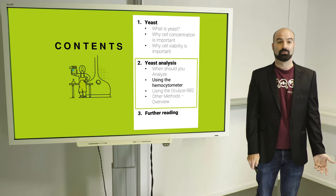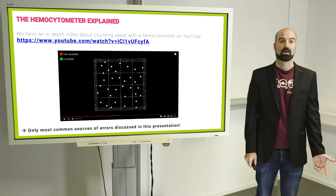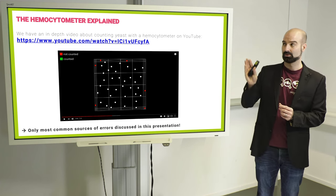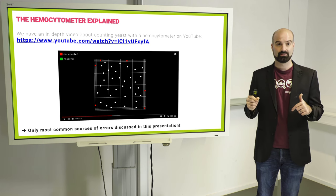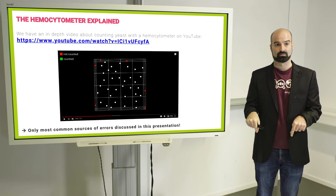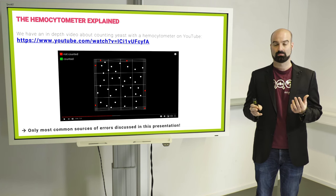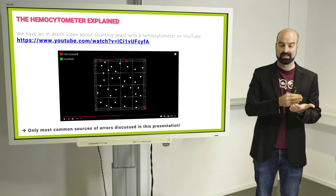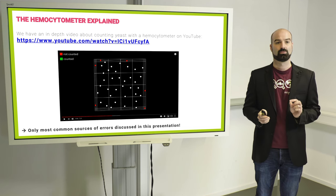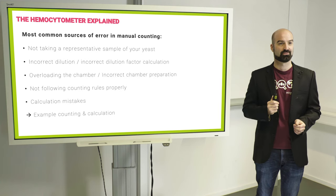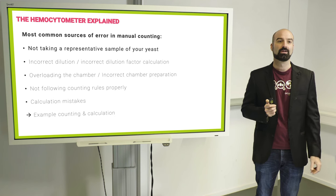So the most common, or at least historical, way to analyze yeast is using a hemocytometer. How does a hemocytometer work? We have a very detailed video which you can find on YouTube. And if you're watching this video on YouTube, we will also have the link in the description below, where you can see in much detail how the hemocytometer is used from beginning to end. In this presentation, we will focus on the most common sources of error that we've seen actually in practice happening in breweries. So this is the list of the errors and we'll go through one by one.